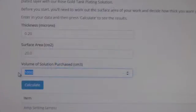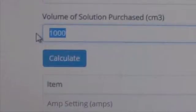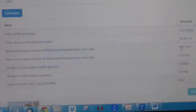In this video we're using 1 liter of our rose gold tank plating solution, so 1000 is entered into the volume of solution field. Press the calculate button and all of the settings will be displayed. Please make a note of these and have this to hand.